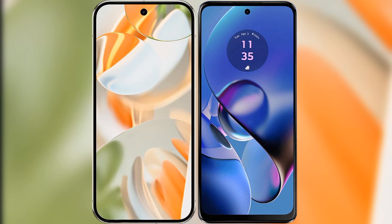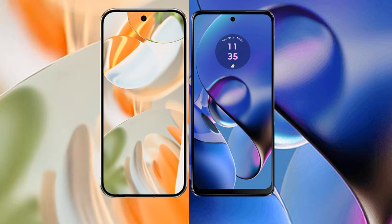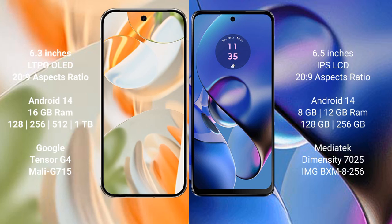I will compare the new Google Pixel 9 Pro with the Motorola Moto G64. The Google Pixel 9 Pro features a 6.3-inch LTPO OLED display, while the Motorola Moto G64 features a 6.5-inch IPS LCD display.